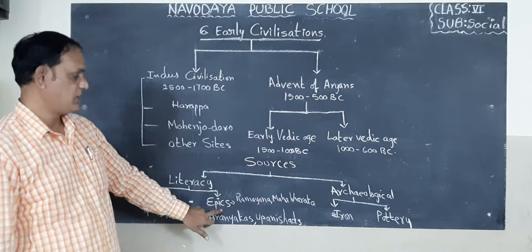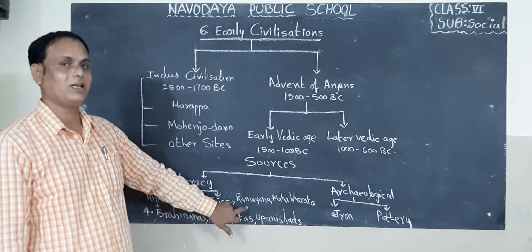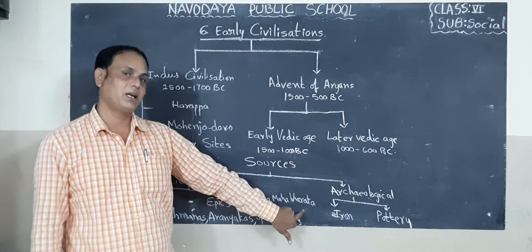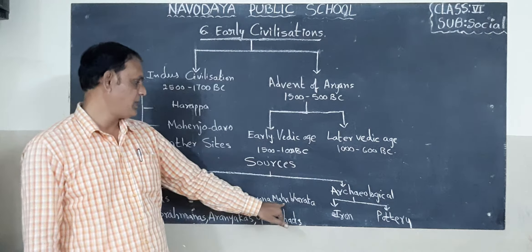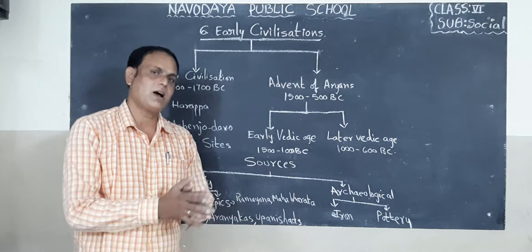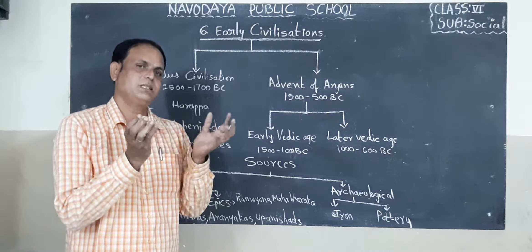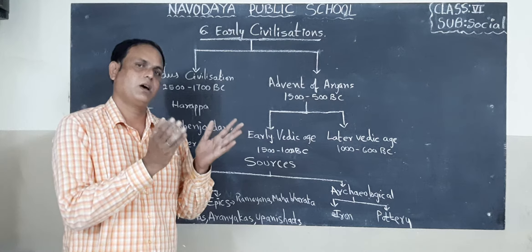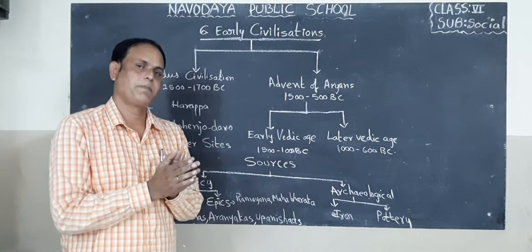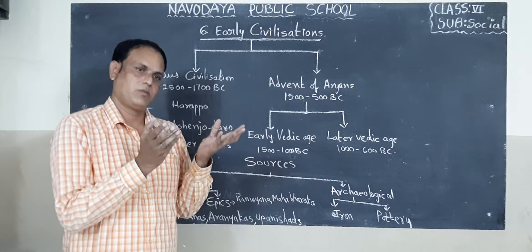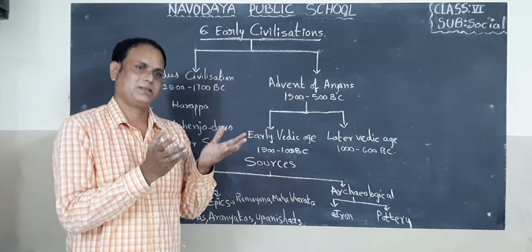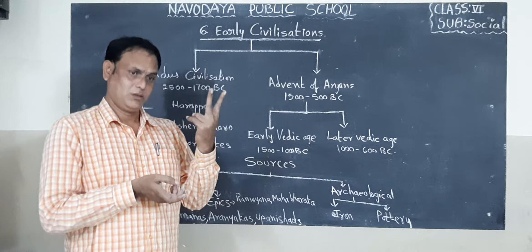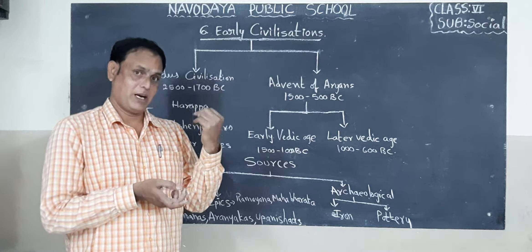We also have epics. We have two epics: Ramayana and Mahabharata. In Ramayana, Rama is the chief leader. He has one wife, Sita, and one brother, Lakshmana. He has two children — Lava and Kusha. He obeyed his father's commandment and went to the wilderness.